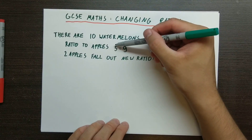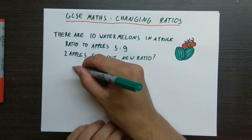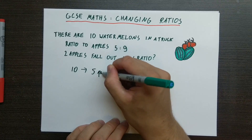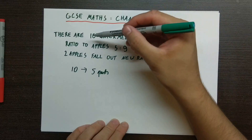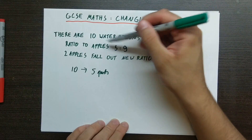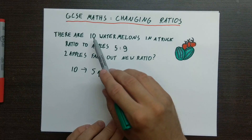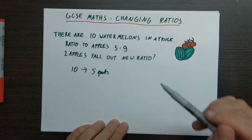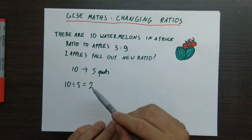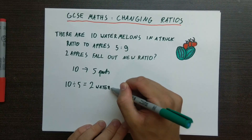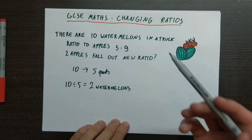We have a 5 to 9 ratio and we have 10 watermelons, so 10 watermelons forms 5 parts. Now we need to find 1 part. We would do this very similarly to proportional division, but because we only know this side — 10 and 5 — we only use this side of the ratio to work out all the parts. So we divide 10 by 5: 10 watermelons divided by 5 parts to find what 1 part is. 10 divided by 5 equals 2, so 1 part is equal to 2 watermelons or 2 apples.